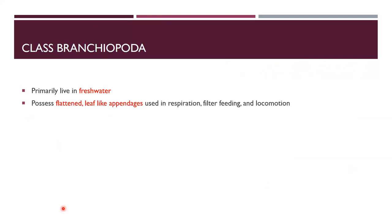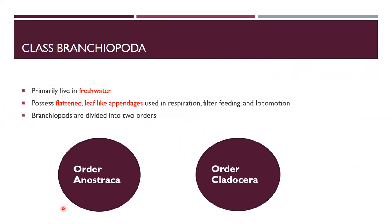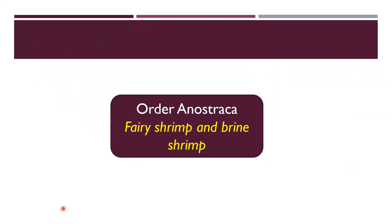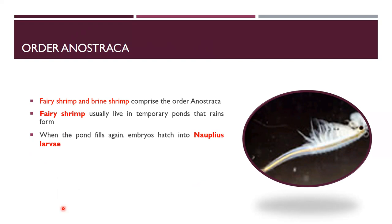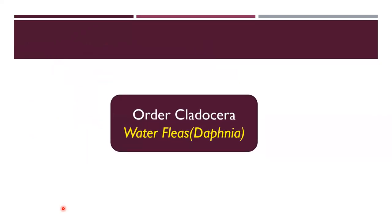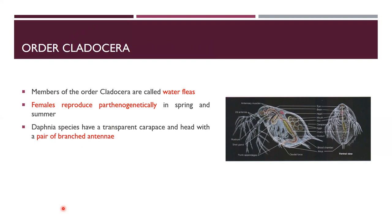Class Branchiopoda contains mostly freshwater organisms. Their body has flattened leaf-like appendages used for respiration, feeding, and locomotion. It is further divided into orders: Anostraca and Cladocera. Order Anostraca includes fairy shrimp and brine shrimp. Fairy shrimp survive in temporary ponds; when the pond fills again, embryos hatch into nauplius larvae. Brine shrimps live in salt lakes and ponds.